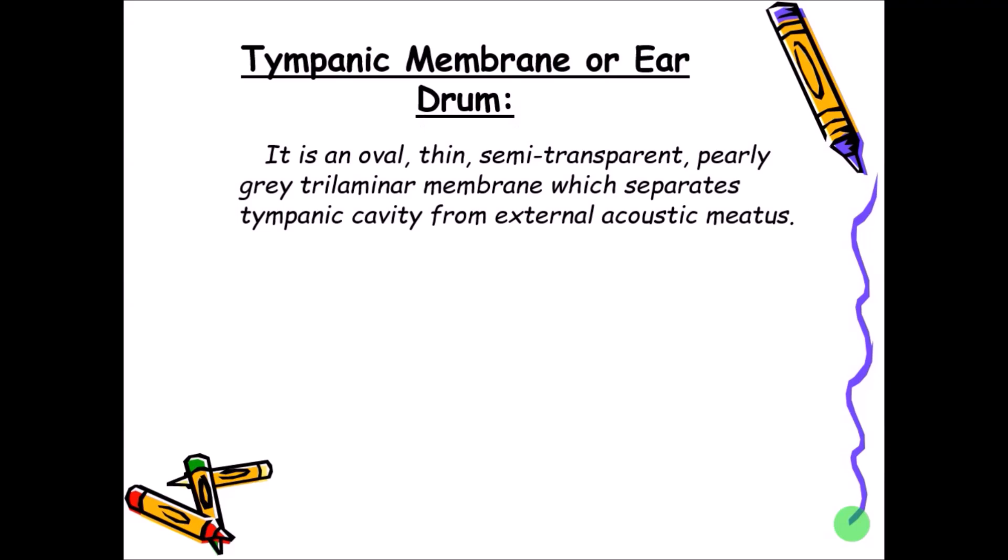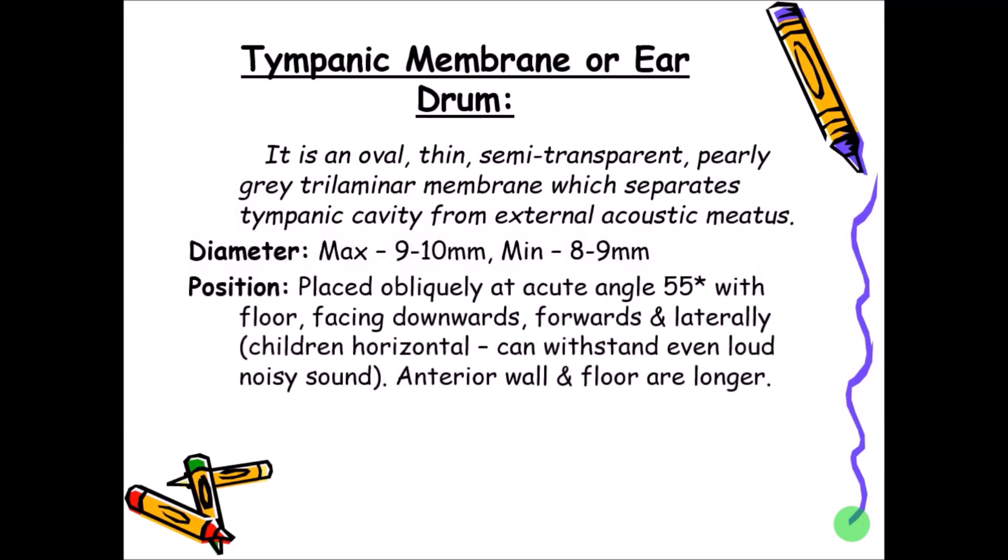The tympanic membrane separates the external ear from the middle ear. Its diameter at the maximum is almost 9 to 10 millimeters and the minimum is 8 to 9 millimeters. It is not vertically or horizontally placed, but obliquely at an acute angle of 55 degrees with the floor, facing downwards, forwards, and laterally.